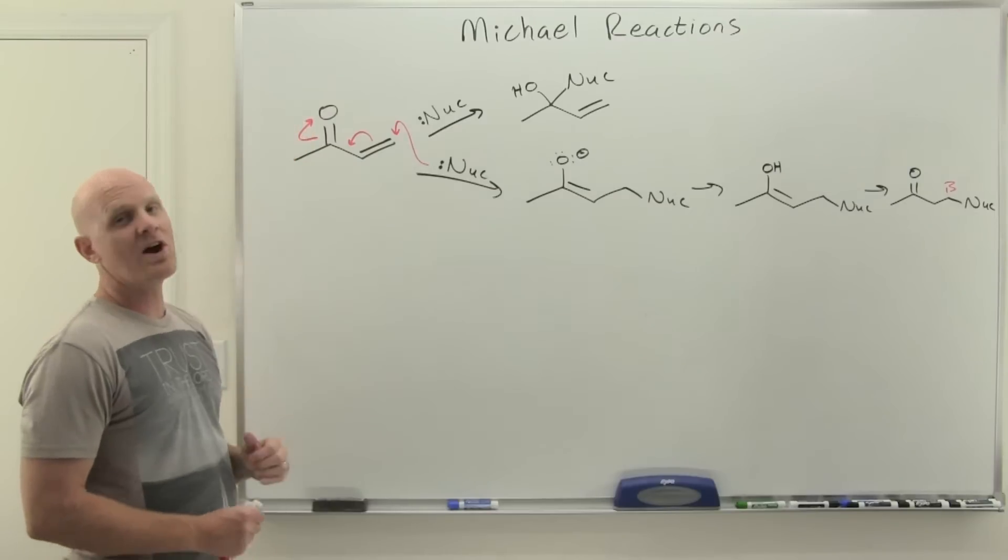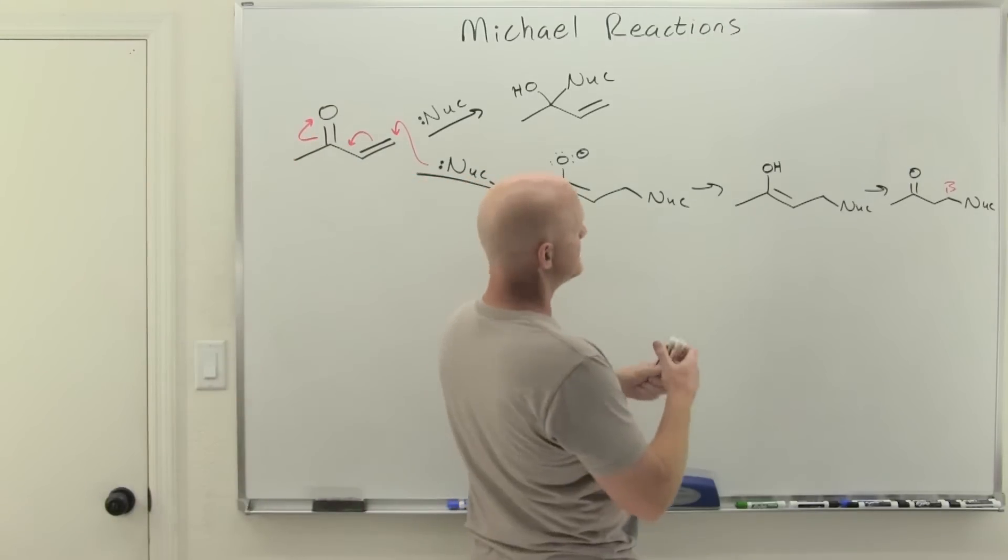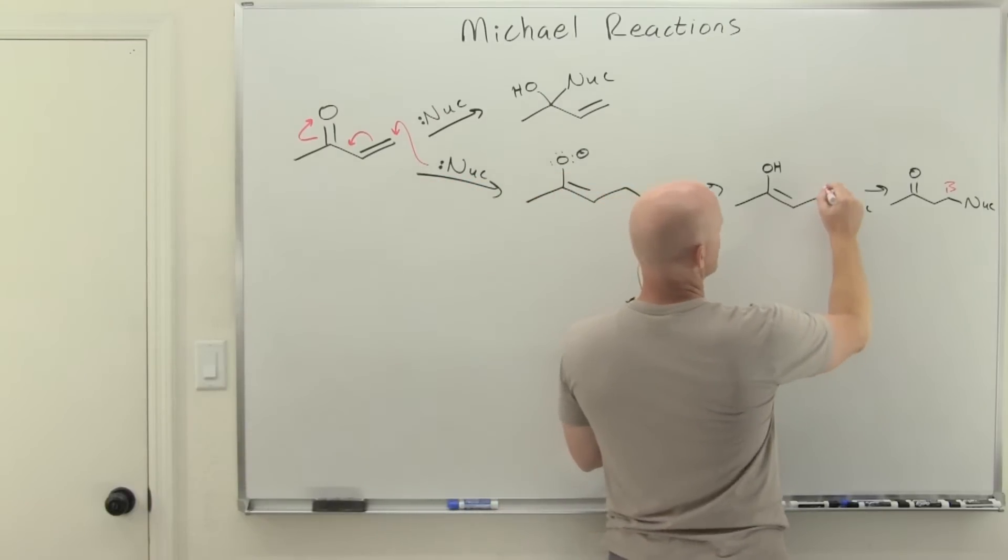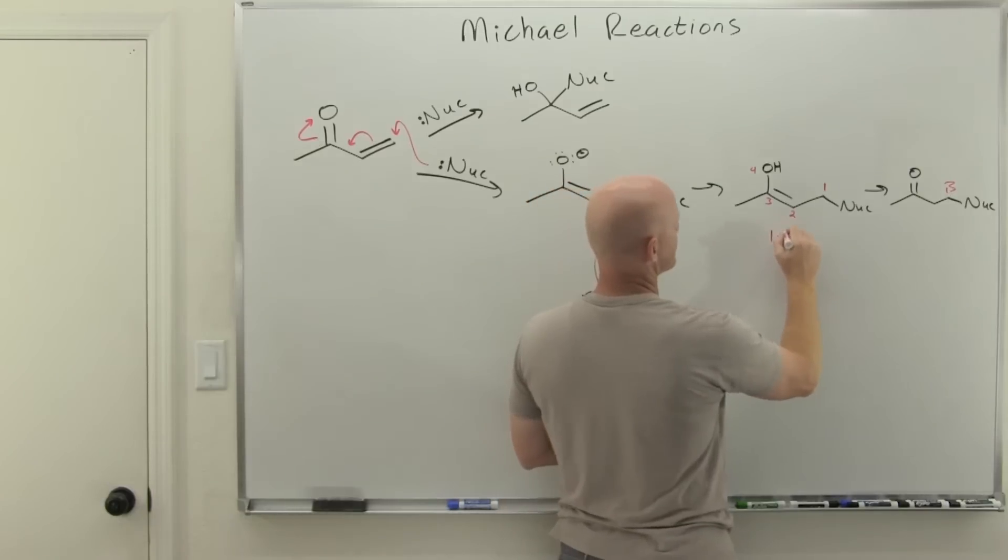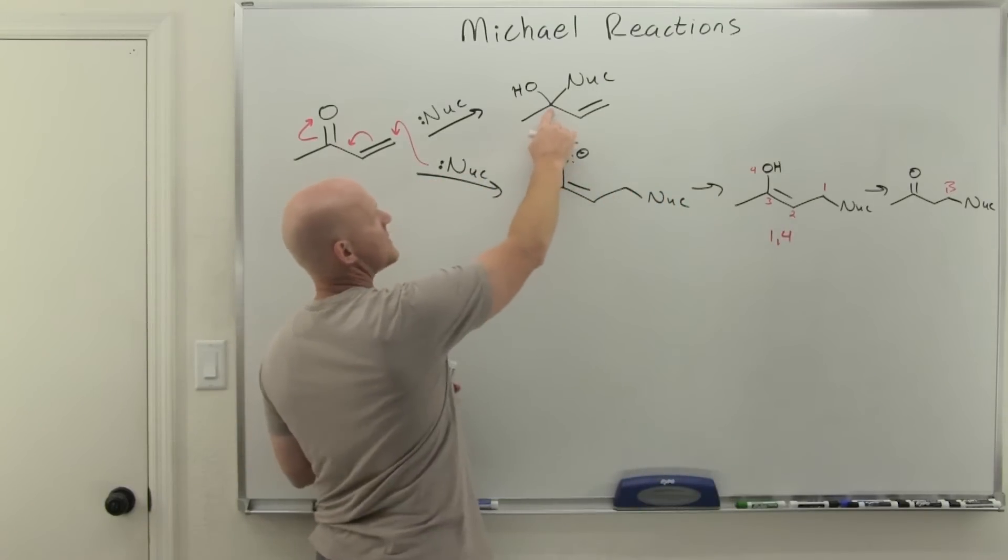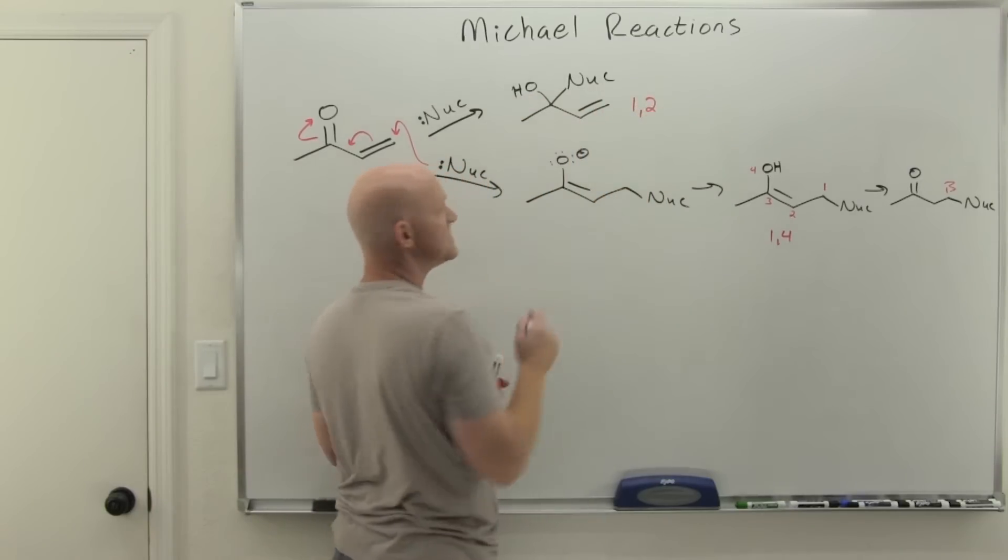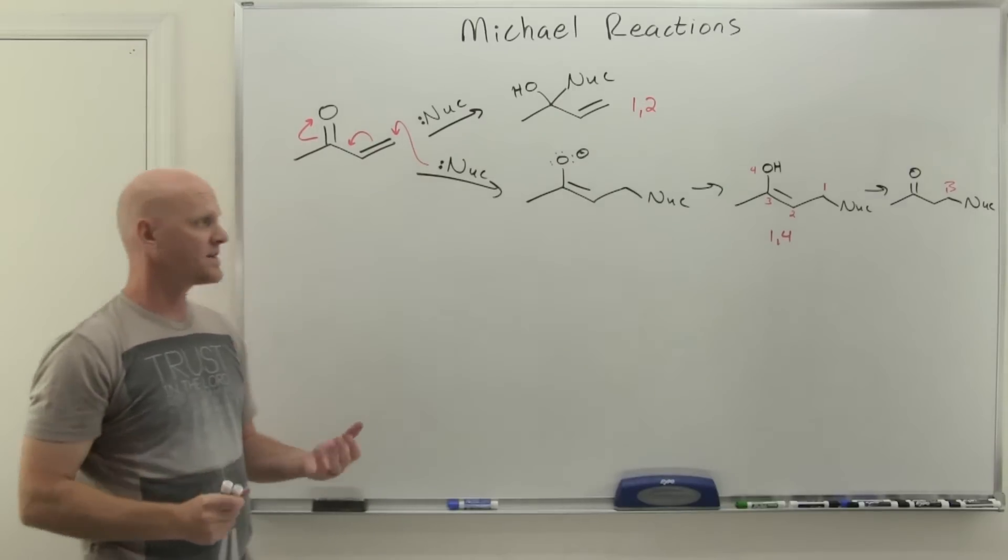We often call this conjugate addition. If you look at where we added things here, we've added something to that carbon there—one, two, three, and the oxygen will be four. Sometimes you call this one-four addition, whereas here you added the nucleophile to this carbon and the oxygen got the hydrogen, so it's one-two addition.